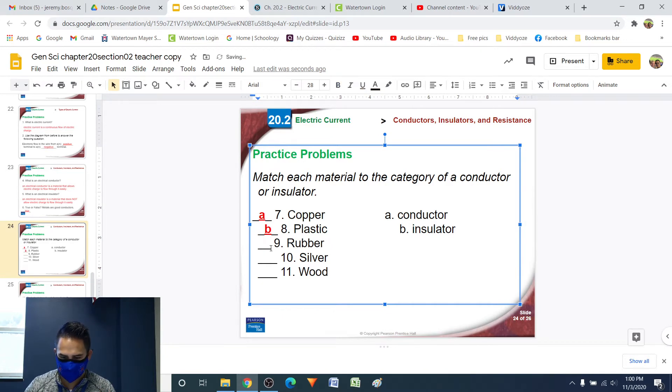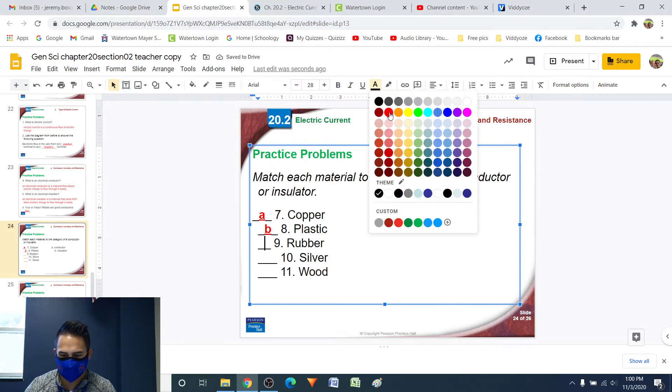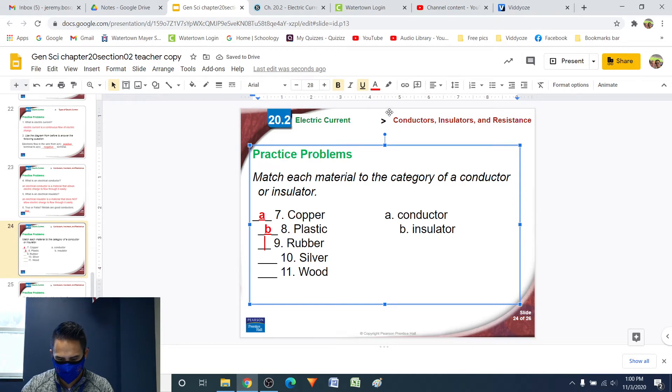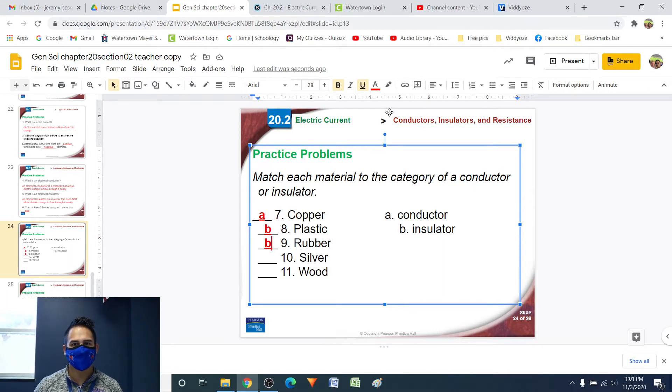Number nine, rubber. Most of us probably know this also is a very good insulator. This is why most of our wires are coated in rubber. So that way the electric charge doesn't get out of the wire and go into places we don't want it to go. Number 10, silver. So silver is a metal and metals, just like copper, are good at conducting electricity. So this one is definitely going to be A, a conductor.